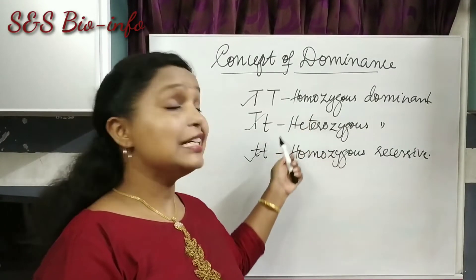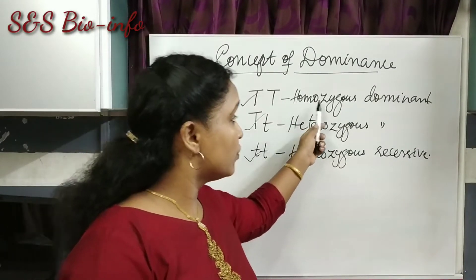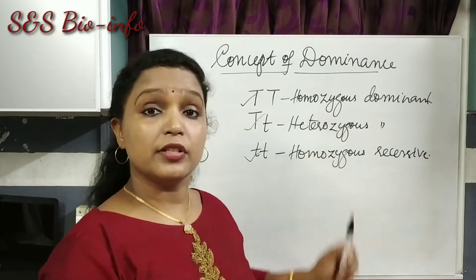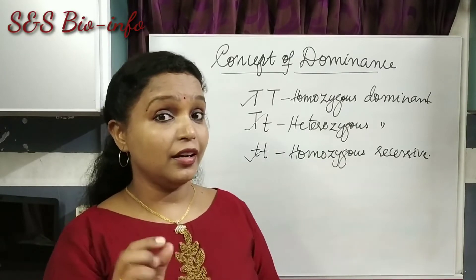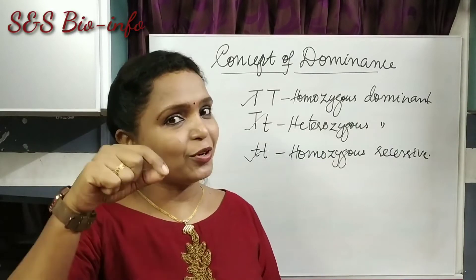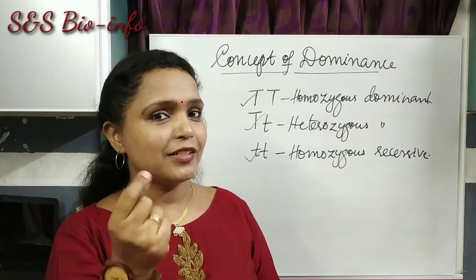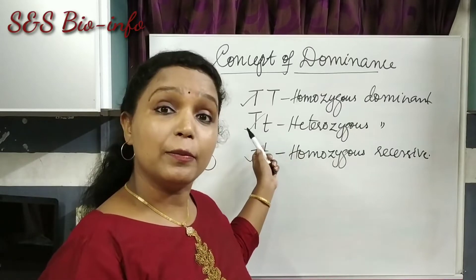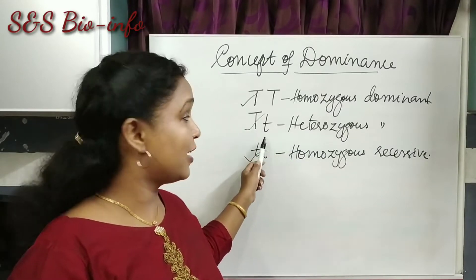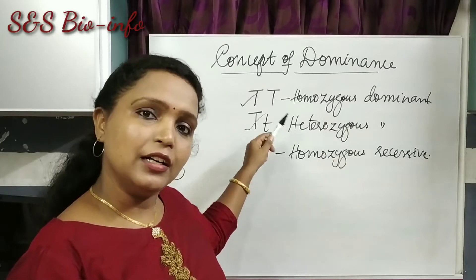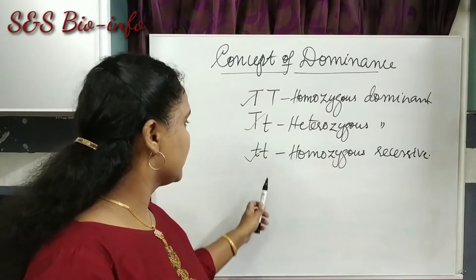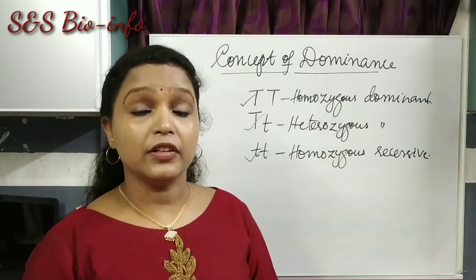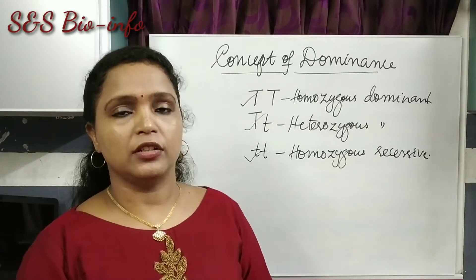Looking at these allelic pairs again: in the case of homozygous dominant, only the dominant trait is expressed. In the heterozygous dominant condition, according to Gregor Mendel, in a dissimilar pair one allele dominates over the other, so the dominant trait will be expressed — tallness will be expressed and dwarfness will be hidden. In homozygous recessive condition, as both alleles are recessive, the recessive trait will be expressed in the offspring.